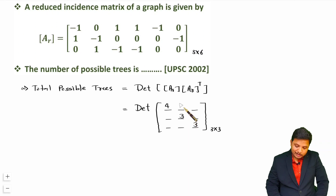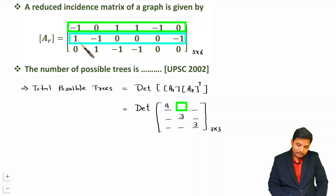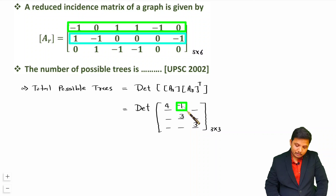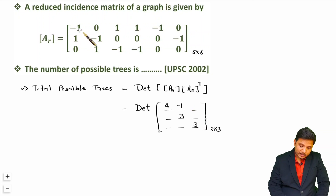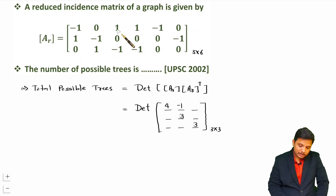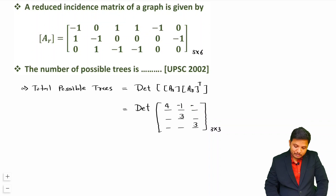For the off-diagonal elements: multiplying first row by second row gives minus 1 plus zeros, so minus 1. Multiplying first row by third row gives 0 plus 0 plus (1 times minus 1) plus (1 times minus 1) plus 0 plus 0, which equals minus 2. Multiplying second row by third row gives 0 plus (minus 1 times 1) plus zeros, equaling minus 1.